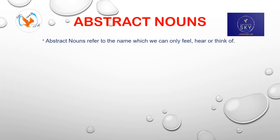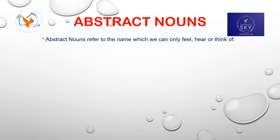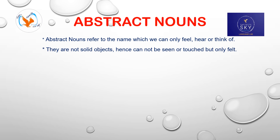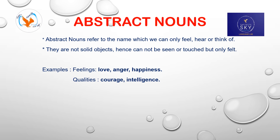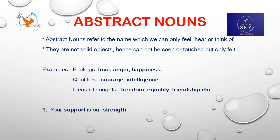Abstract nouns refer to names which we can only feel, hear or think of. They are not solid objects; hence, they cannot be seen or touched but only felt. Abstract nouns can be classified into: Feelings such as love, anger, happiness; Qualities such as courage, intelligence; and Ideas or thoughts such as freedom, equality, friendship. Some examples in sentences: 'Your support is our strength.' 'We must use time wisely.' 'Honesty is the best policy.' Support, strength, time, and honesty are examples of abstract nouns.